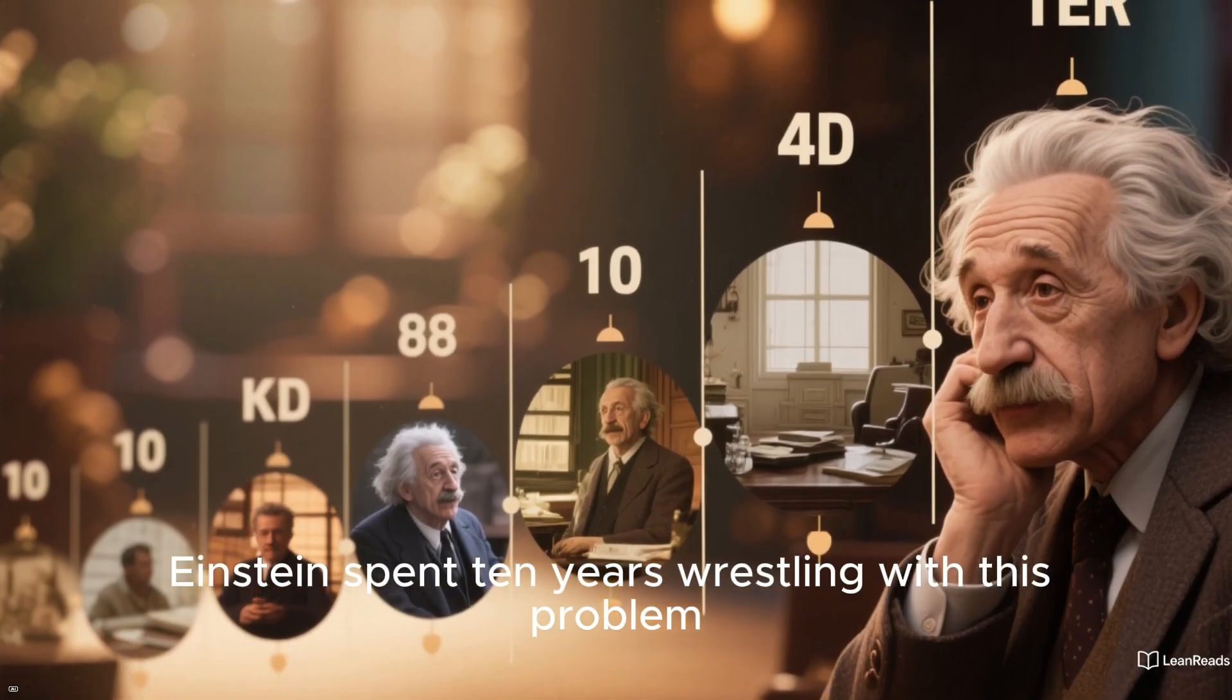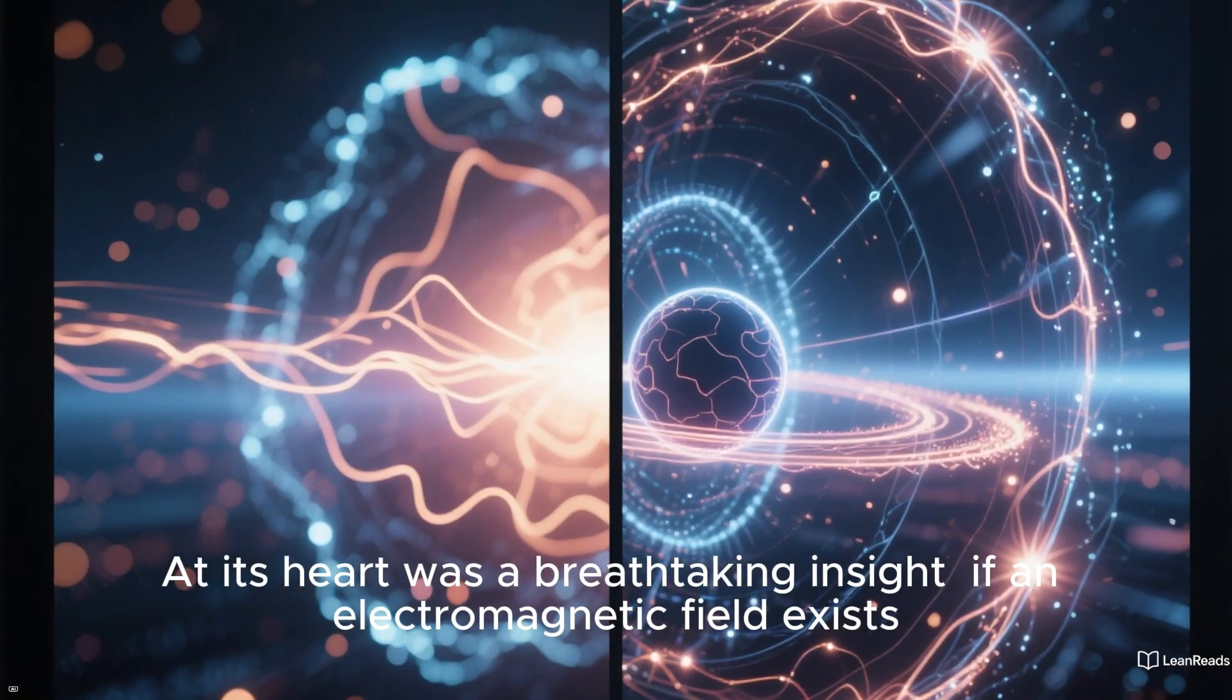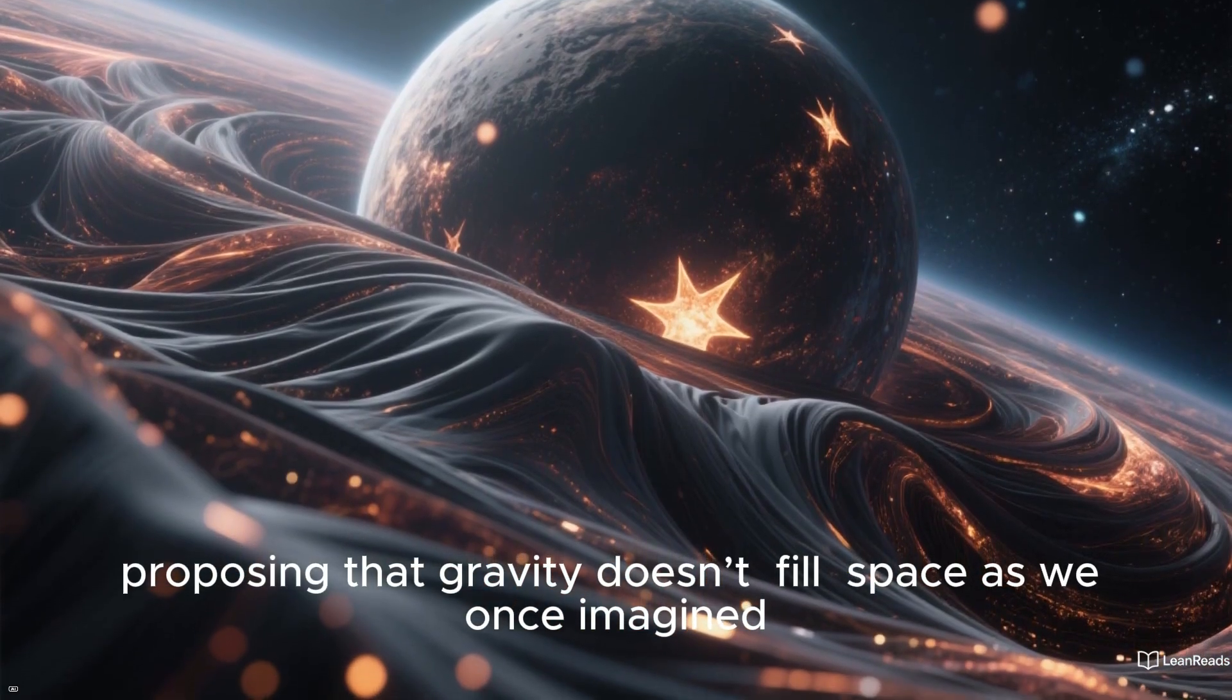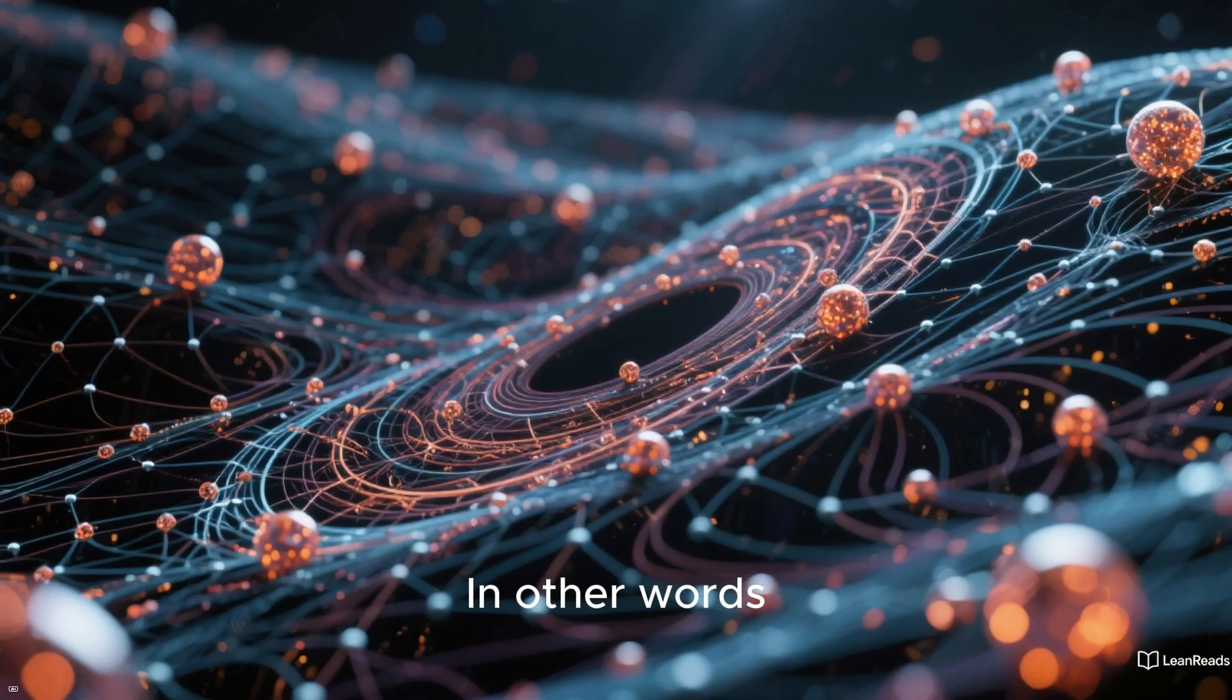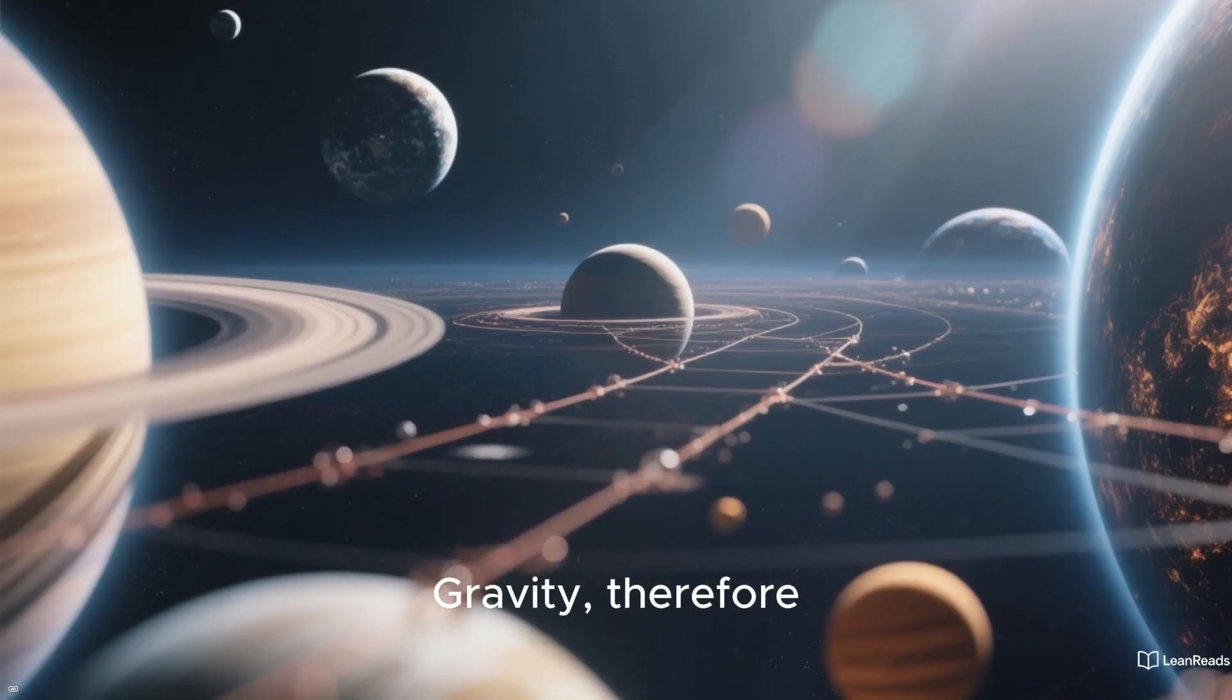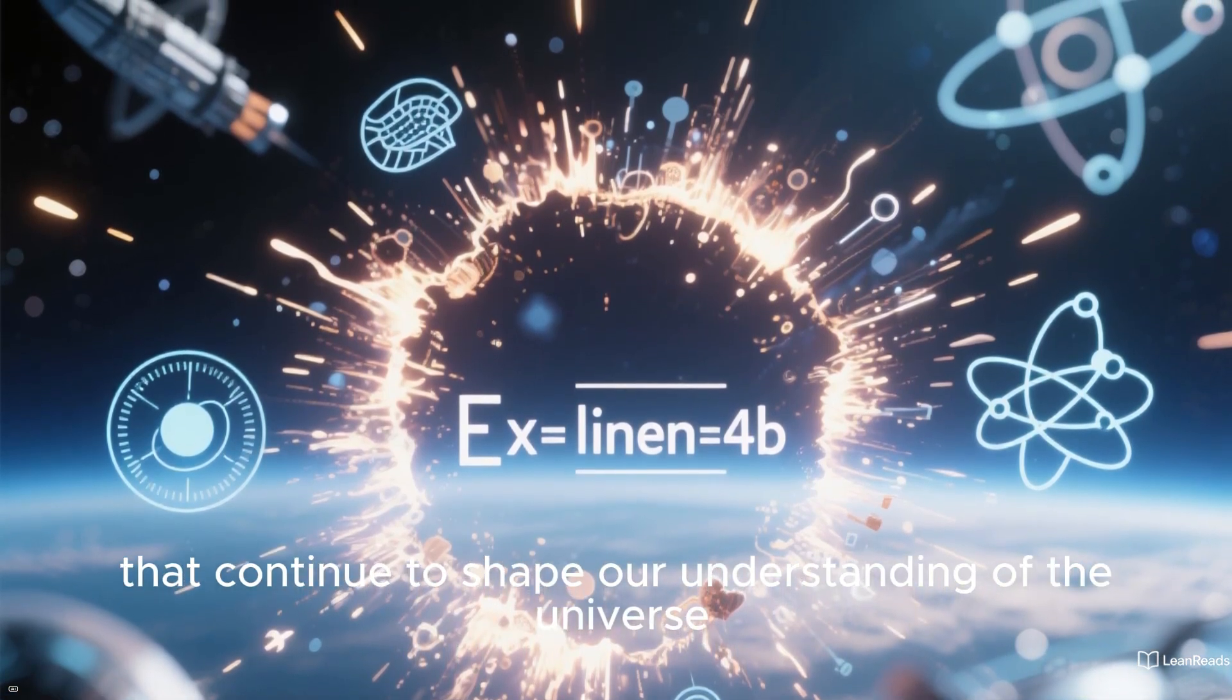Einstein spent ten years wrestling with this problem. The result was his masterpiece, the general theory of relativity. So elegant was this theory that some have compared it to Mozart's Requiem or Homer's Odyssey. At its heart was a breathtaking insight. If an electromagnetic field exists, so must a gravitational field. But Einstein went further, proposing that gravity doesn't fill space as we once imagined. Instead, space itself is not flat. It bends around massive objects like stars and planets. In other words, matter curves the fabric of space-time, and this curvature is what we experience as gravity. Other bodies then move along the curved paths dictated by this bending. Gravity, therefore, acts like a ruler that holds everything together, preventing it from flying apart. Einstein's work provided the perfect launching pad for future theories that continue to shape our understanding of the universe.